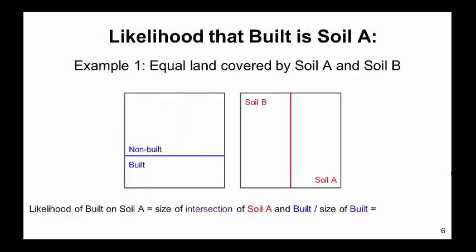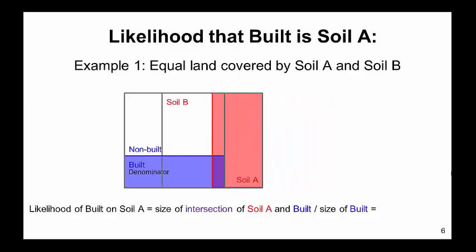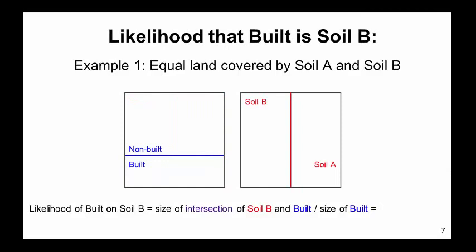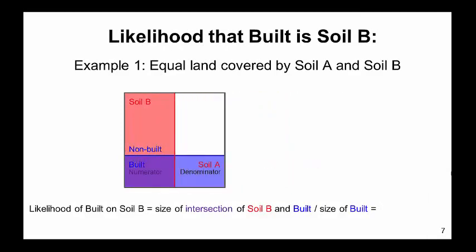In the case of likelihood, the denominator is the size of built rather than a soil type. In calculating the likelihood of built on soil A, the numerator is the intersection of built and the soil of interest. The likelihood that built is soil A is 0.5, because 50% of the built land is on soil A. For soil B, the numerator is the intersection of soil B and built. The likelihood that built is soil B is 0.5.